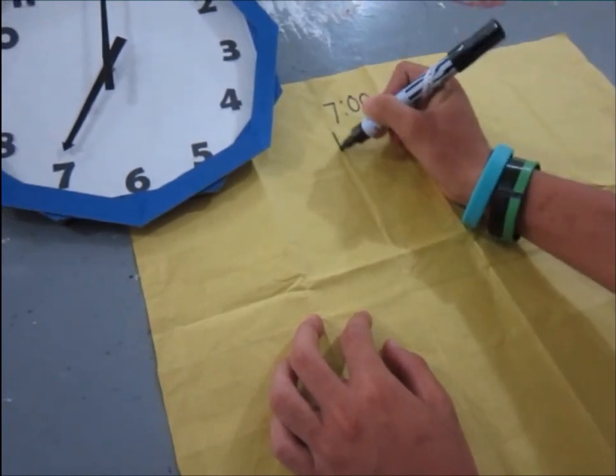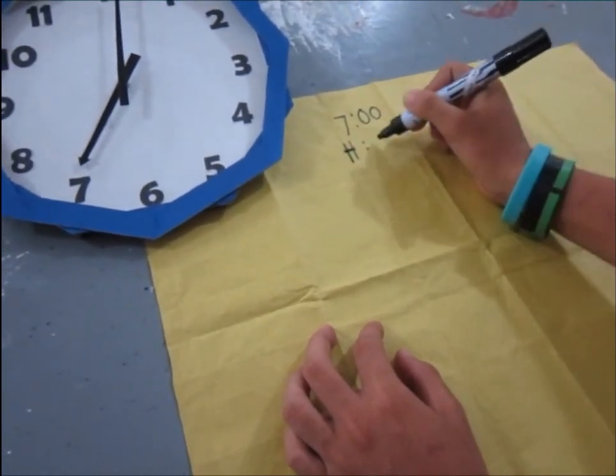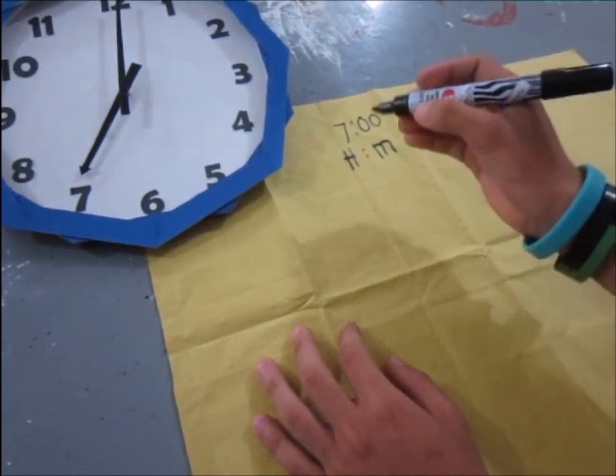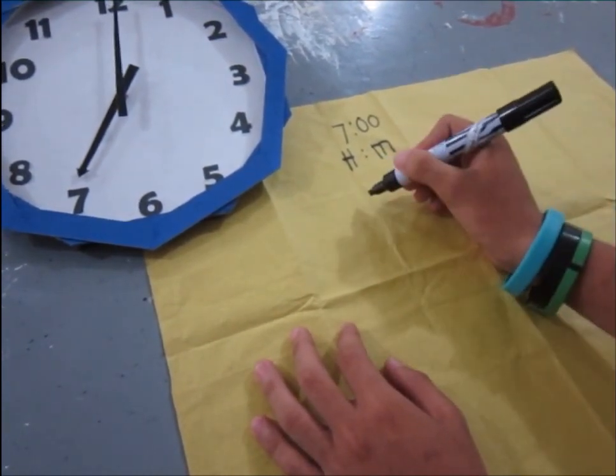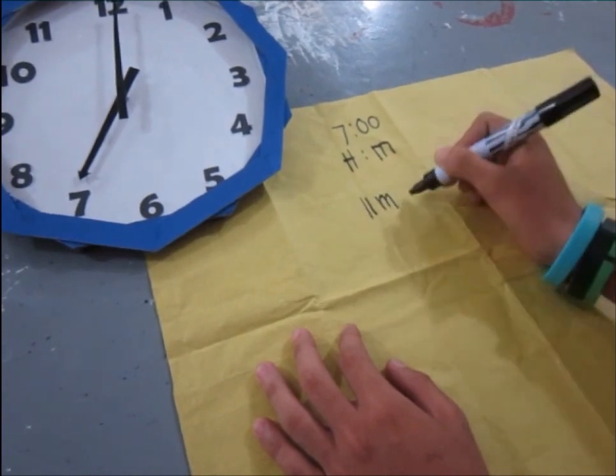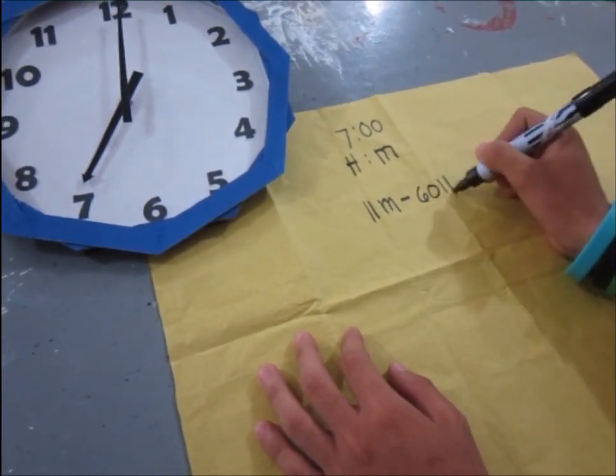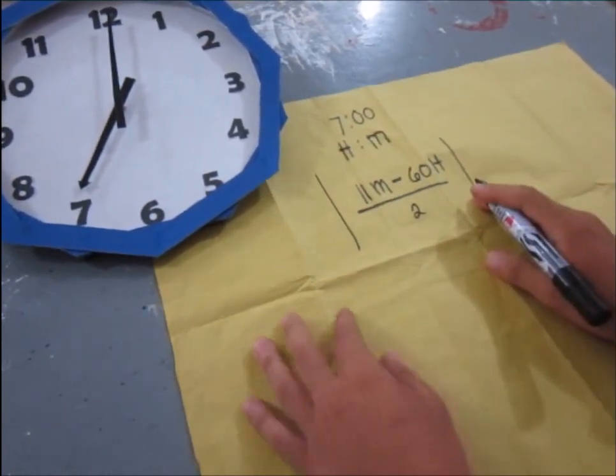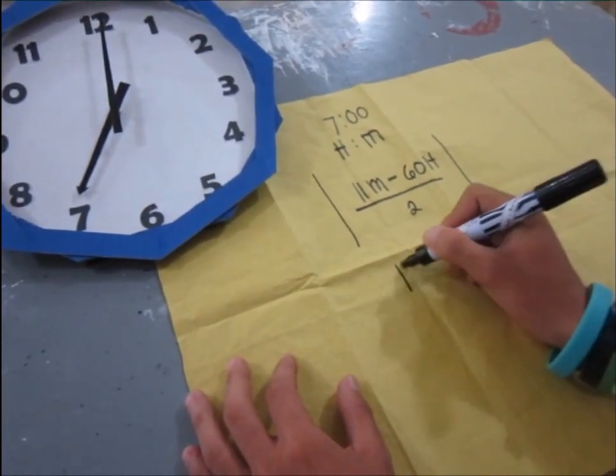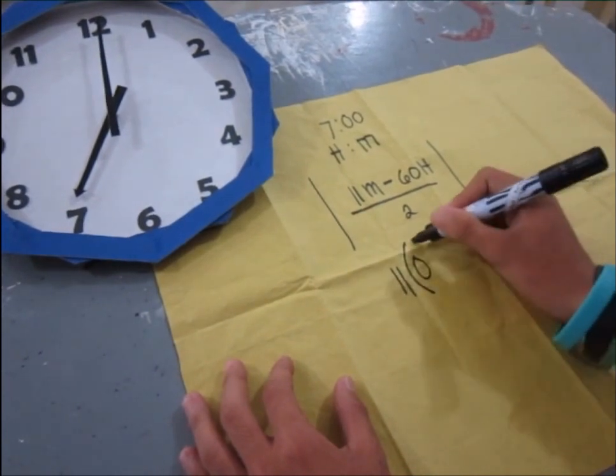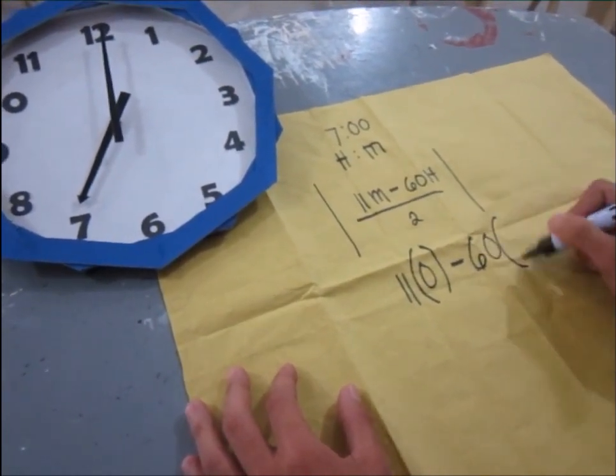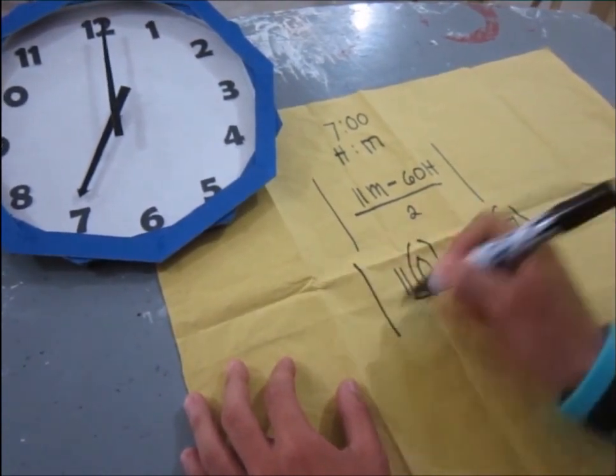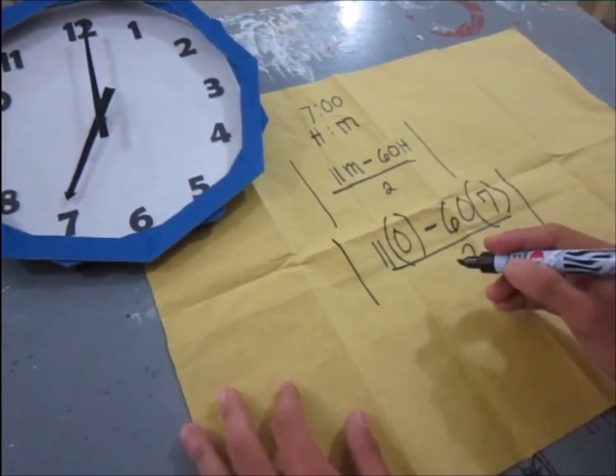7 is the h, and 0 is the minute. Substituting in the formula, 11m minus 60h all over 2, absolute value. That is equal to 11 times 0 minus 60 times 7 all over 2, absolute value.